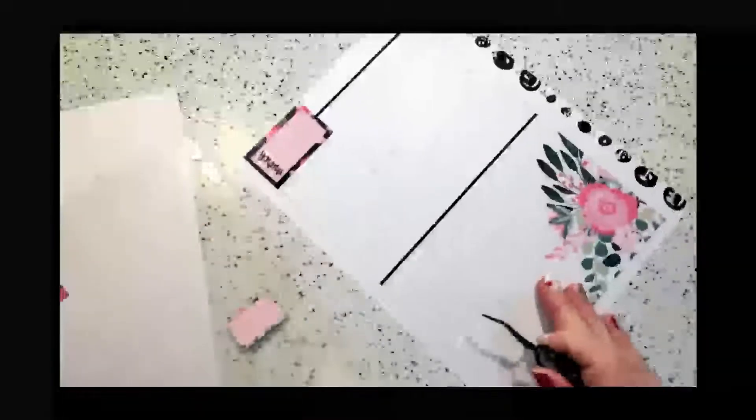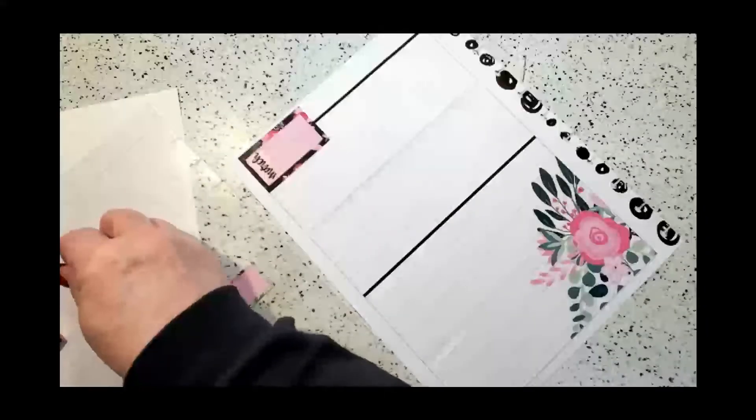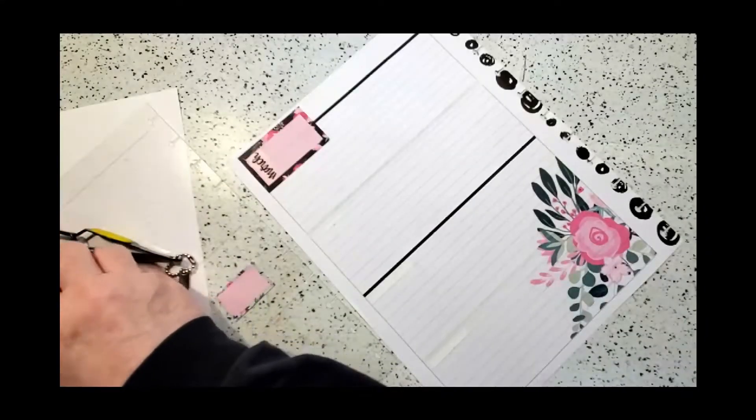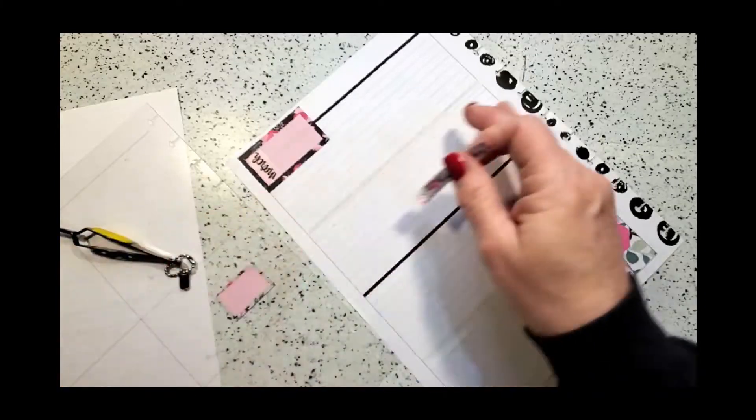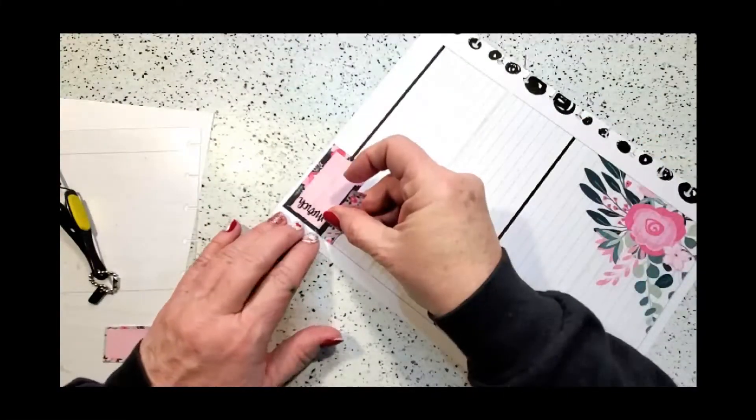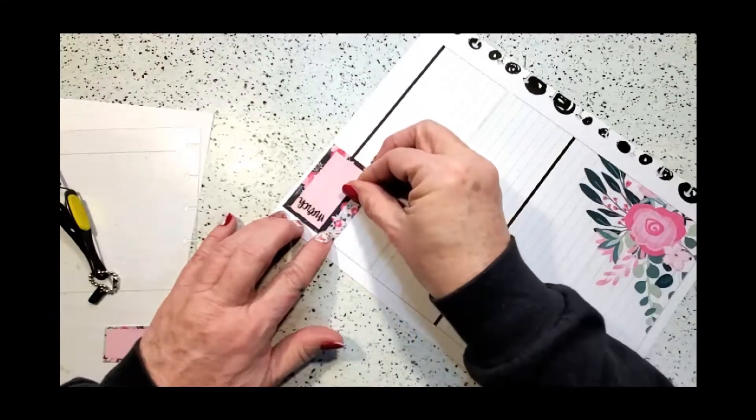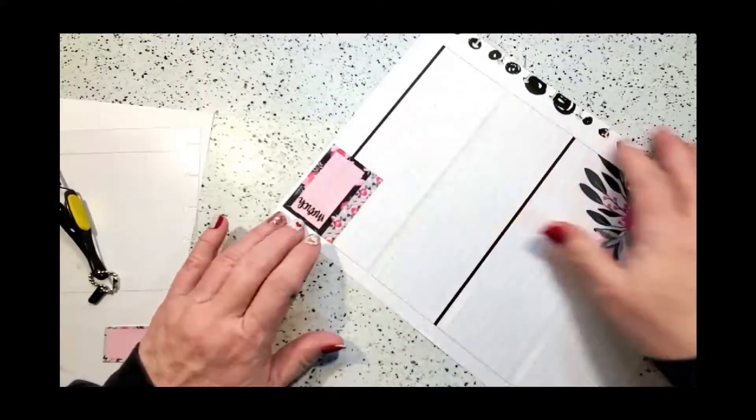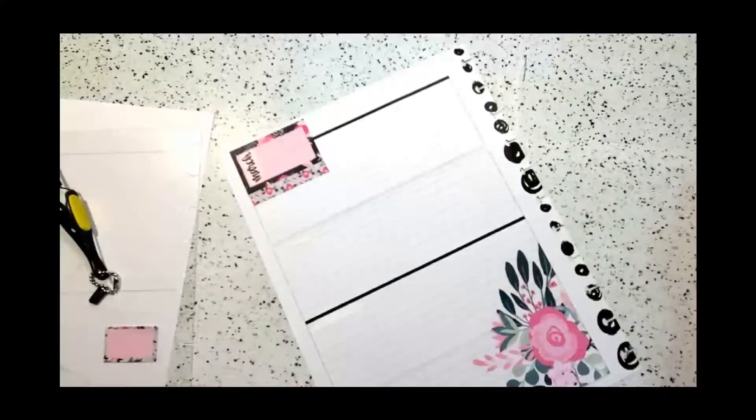Now I'm going to add some washi tape under here because the other side in Happy Planners—they know best what to put in our planners—on the other side of this page there's a big orange box.